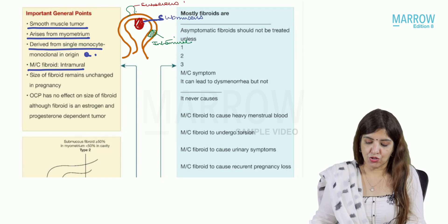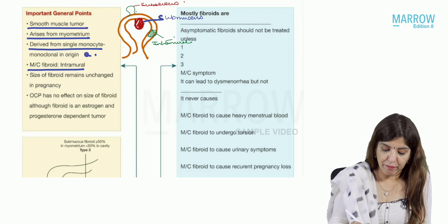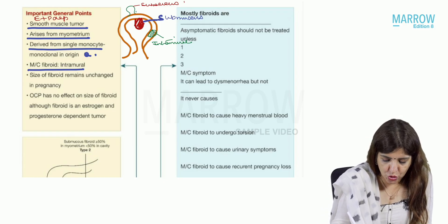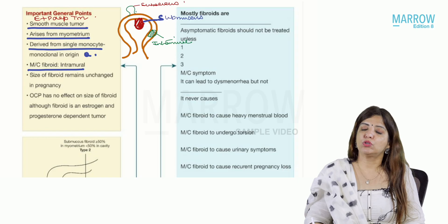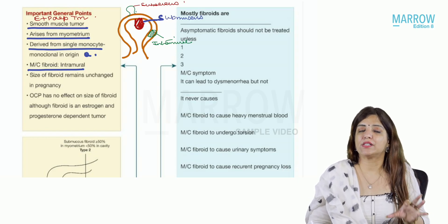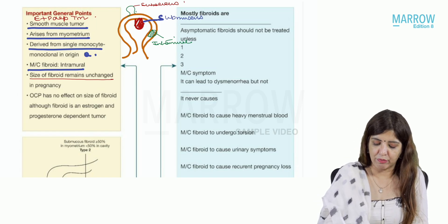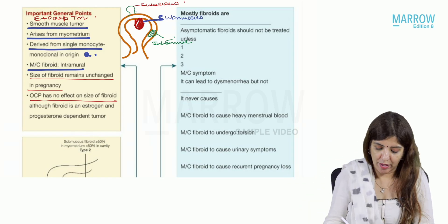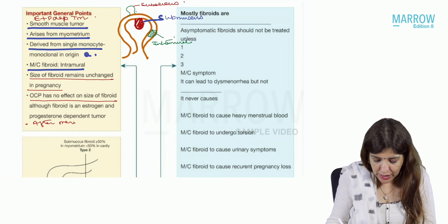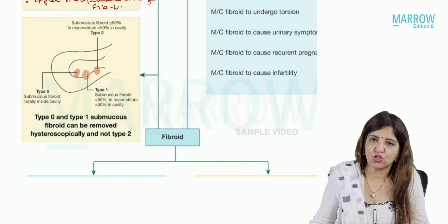The most common fibroid is intramural fibroid. To begin with, all fibroids are intramural. Fibroid is an estrogen plus progesterone dependent tumor, whereas endometriosis was only an estrogen dependent condition. Although it is an estrogen and progesterone dependent tumor, pregnancy does not affect the size of the fibroid — the size remains unchanged in pregnancy. OCP also does not have any effect on the size of the fibroid. After menopause, the size of the fibroid decreases.